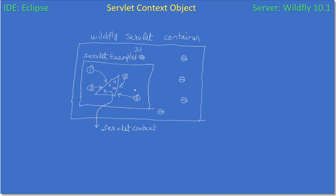One web application holds one servlet context, and the servlet context is common for all the servlets hosted inside that web application. Likewise, if we have other web applications, they have their own servlet context. If that web application has five or six servlets, then all six servlets share the servlet context that belongs to that web application.